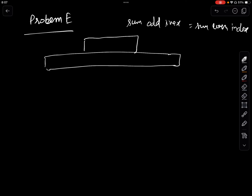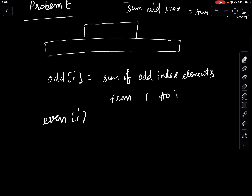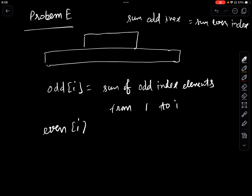Let me define two prefix sum arrays. I'll define odd[i] to denote the sum of odd-indexed elements from 1 to i. Similarly, even[i] will denote the sum of elements at even indexes from 1 to i.